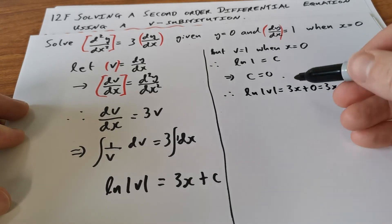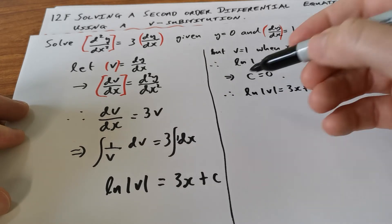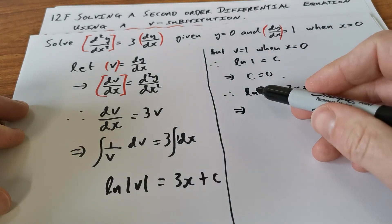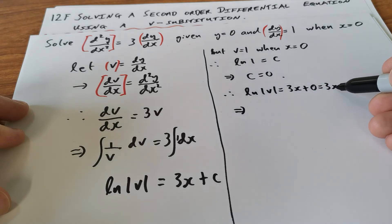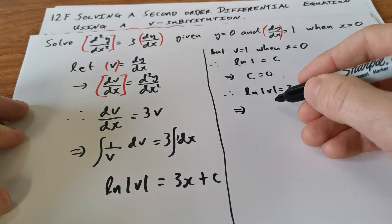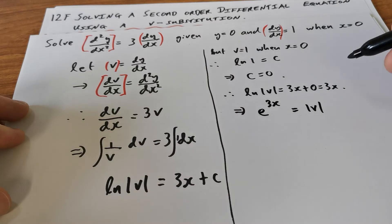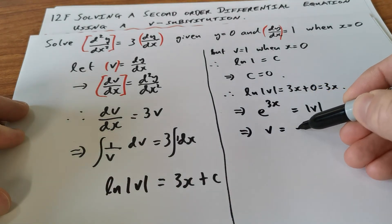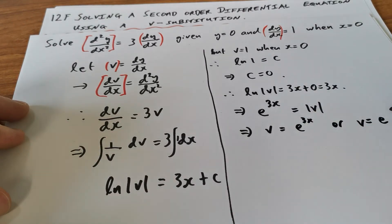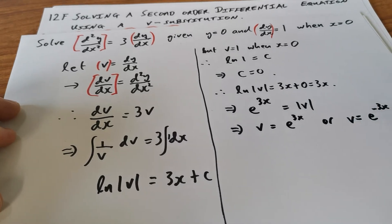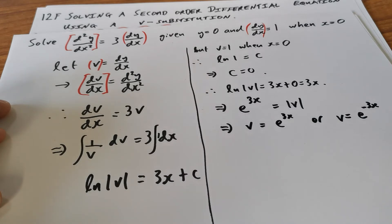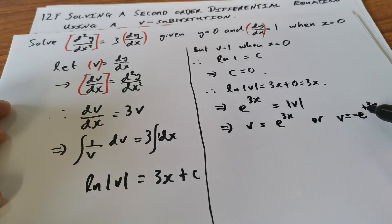We've found a particular solution. Now solving for V: ln|V| = 3x means that 3x is the exponent to which e is raised to get |V|. Changing from logarithmic form to exponential form, V could be e^(3x) or V could be negative e^(3x) — remembering what absolute value means.